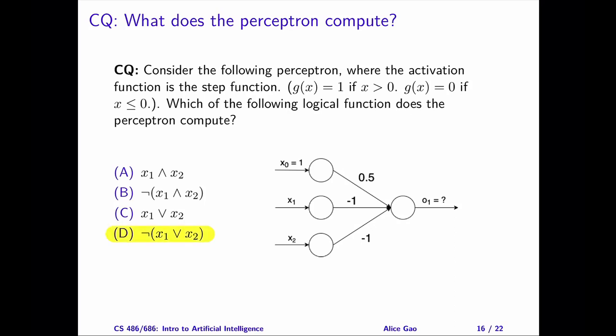The correct answer is D. This perceptron is computing a negation of the OR function. The easiest way to derive this answer is to draw a truth table. With two inputs, there should be four rows in the table.